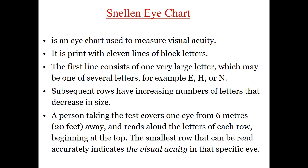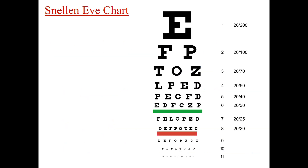The subsequent rows have an increasing number of letters with decreasing size as you go down. The person is placed six meters or 20 feet away from the chart and asked to read the letters aloud from top to bottom. The more lines with small letters the person can read, the better the visual acuity.